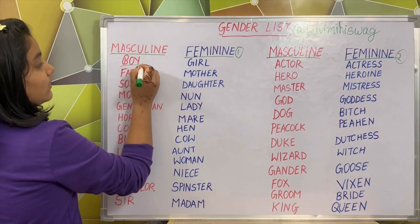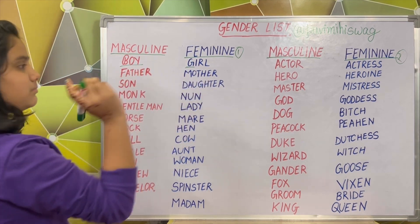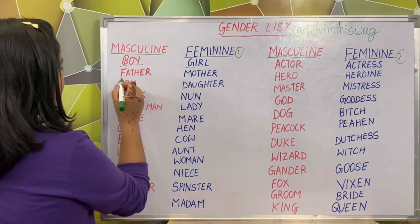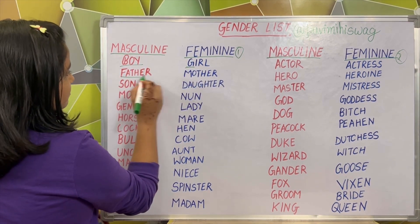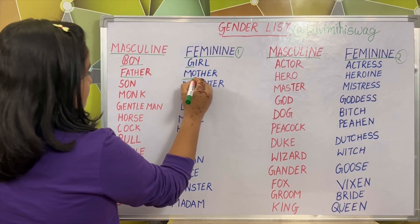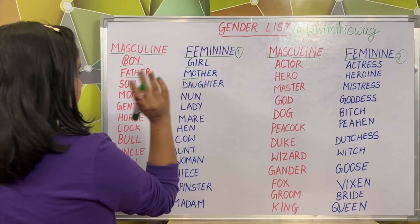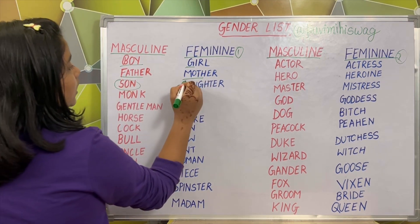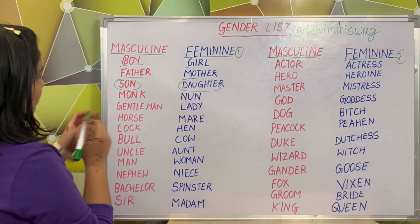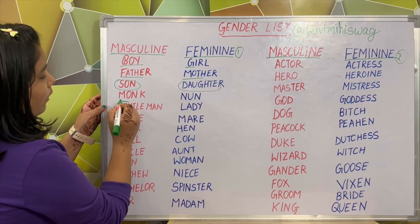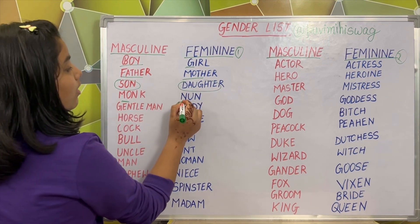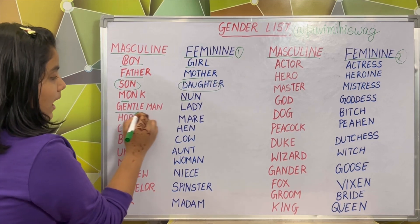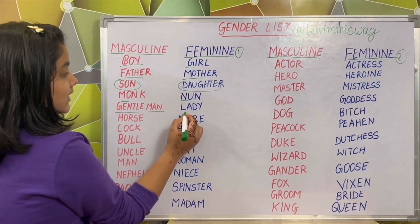Boy — girl. Father — mother. Son — daughter. Monk — nun. Gentleman — lady.